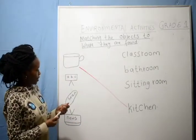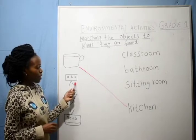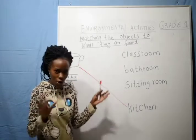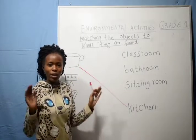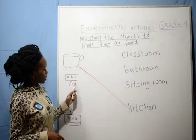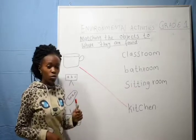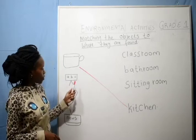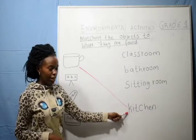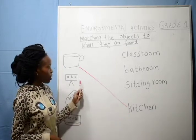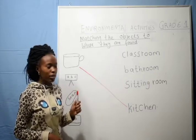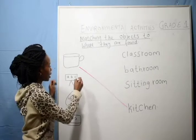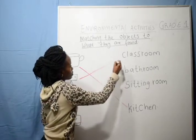Then we move to our next object. What is this? A blackboard. Is a blackboard found in the bathroom? No. Is it found in the sitting room? No, we cannot find a blackboard in the sitting room. Can we find a blackboard in the kitchen? No — it is found in the classroom. So we match the blackboard in the classroom.